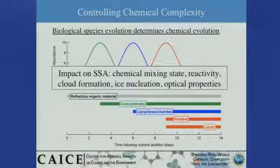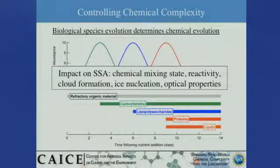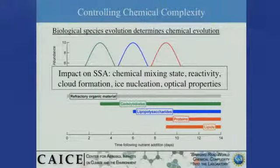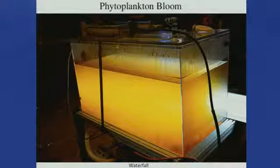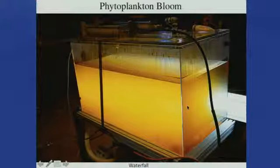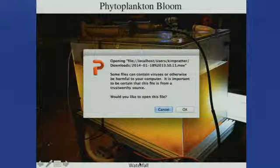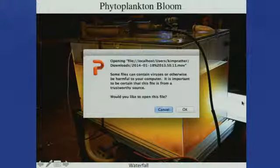The question is, as we do these changes, do we see changes in climate properties? We can mimic cloud formation in the lab — both liquid clouds and ice clouds. This is the tank we developed, called the MART tank. When we get a bloom, you can see that a lot of things change after we spike it. It turns out that the waterfall is not a simple thing to get right.